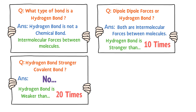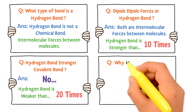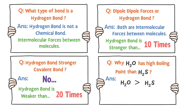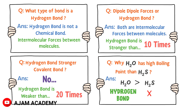Third: is hydrogen bonding stronger than a covalent bond? No — a hydrogen bond is 20 times weaker than a covalent bond, or equivalently, a covalent bond is 20 times stronger than a hydrogen bond. Fourth: why does water have a higher boiling point than hydrogen sulfide? Although H₂O and H₂S are very similar molecules, water has hydrogen bonding while hydrogen sulfide does not, giving water its higher boiling point.